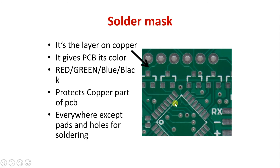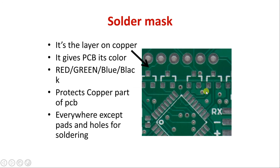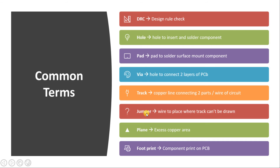VIAs can be seen as small holes in the PCB snapshot. Then there are tracks, which are the copper lines connecting two parts — essentially the wires of a circuit. You can see these as vertical, horizontal, and diagonal lines on the PCB. In a single-sided PCB where you cannot draw a track between two points, you connect those two points using an external wire — that is called a jumper.